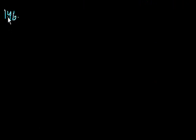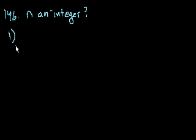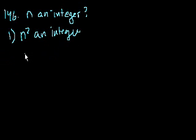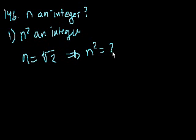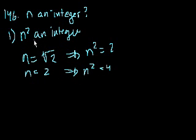Problem 146: is n an integer? Statement 1 says n squared is an integer. Well, that doesn't help us. What if n was equal to the square root of 2? Then n squared would be equal to 2, which is an integer, but the square root of 2 is clearly not an integer. On the other hand, n could equal 2, in which case n squared is also an integer. Both cases give an integer n squared, but one has n as an integer and one doesn't. So statement 1 alone is not enough.